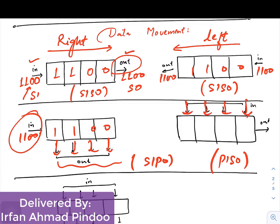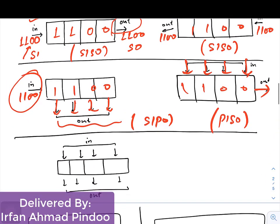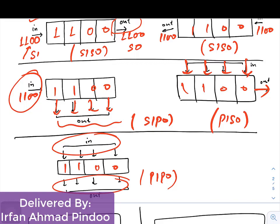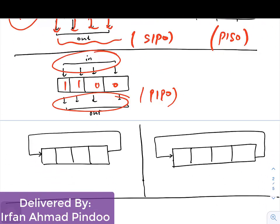For Parallel In Serial Out (PISO), the data is given in parallel form but the output is taken only in serial form. We will see its applications in subsequent lectures. The last type is Parallel In Parallel Out (PIPO), where both input and output are in parallel form. These are the four types of shift registers.